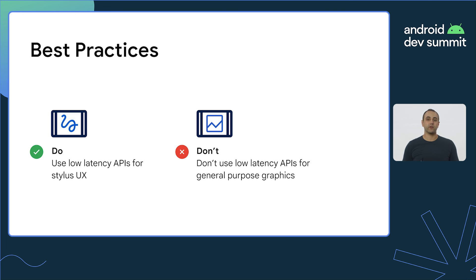Let's take a moment to identify when we should leverage the low-latency Jetpack library. Because front-buffered rendering introduces the possibility for visual artifacts, this should only be used for stylus user experiences. This is not recommended for rendering your entire application UI. With that, you have everything you need to implement low-latency graphics. With hundreds of millions of large-screen Android devices worldwide, now has never been a better time to optimize your applications for stylus input.